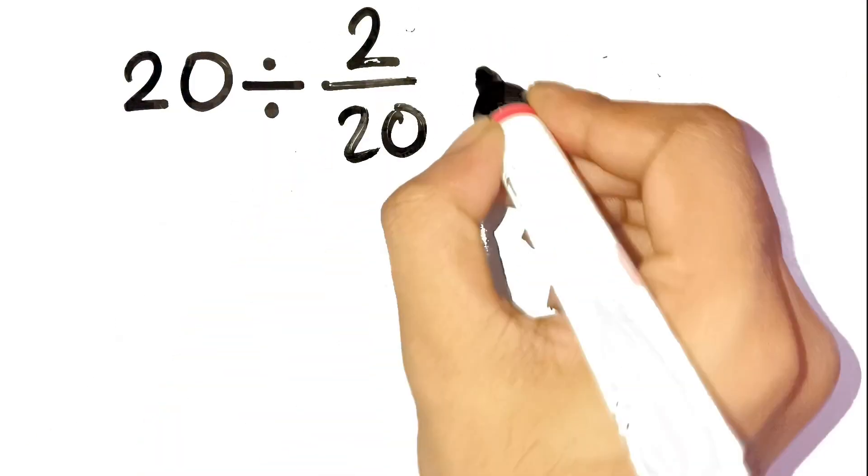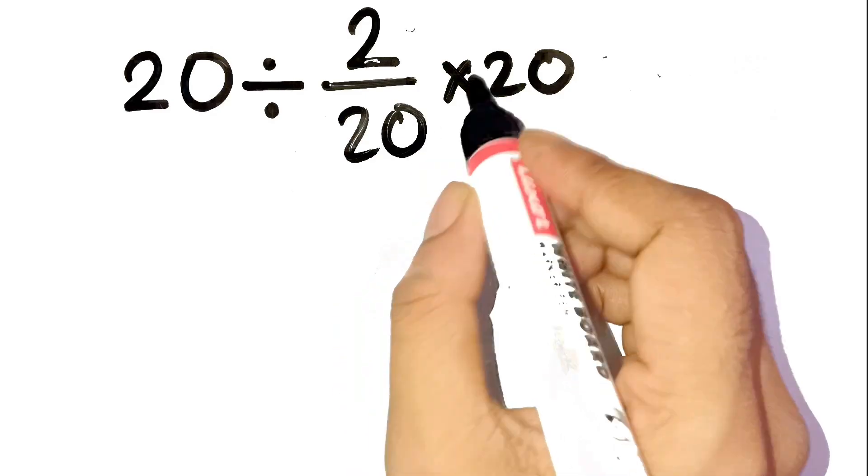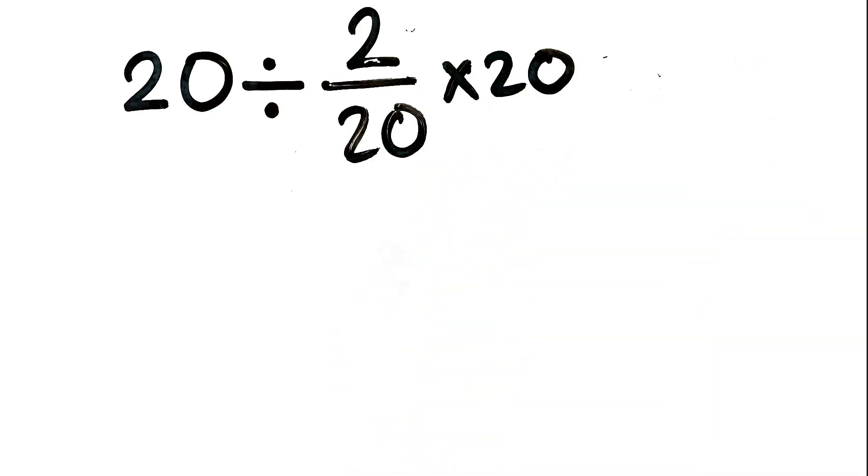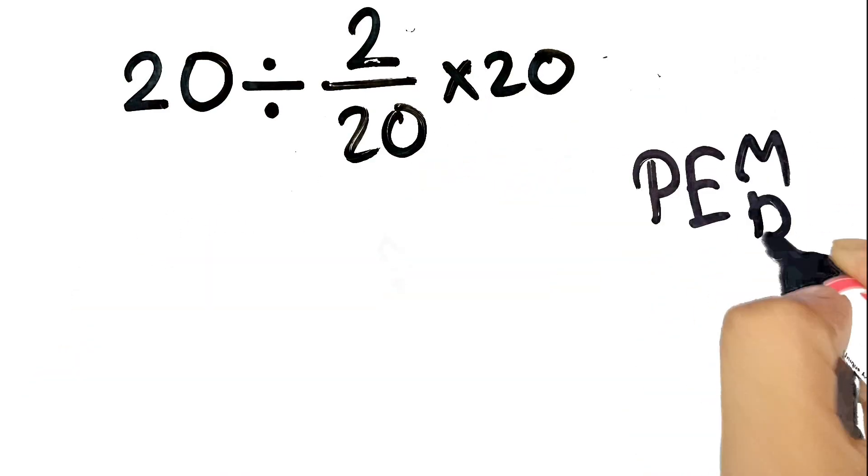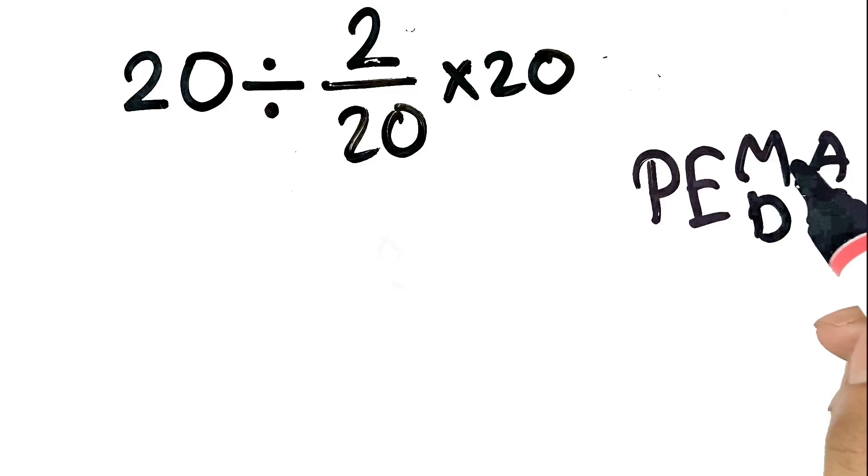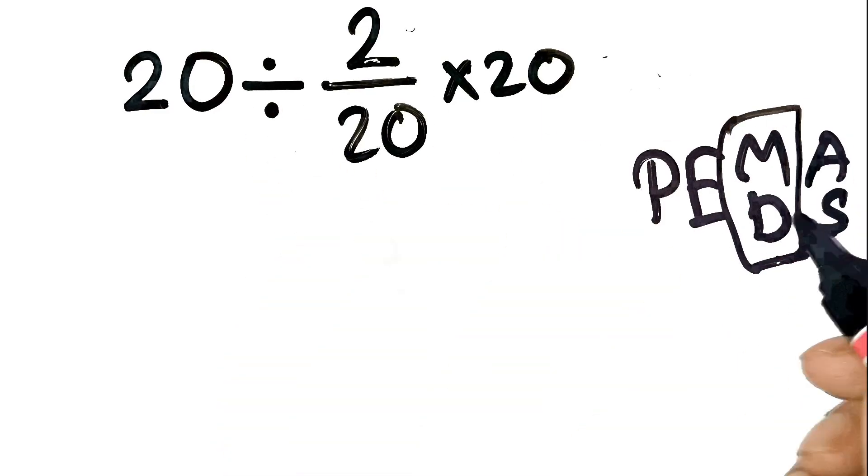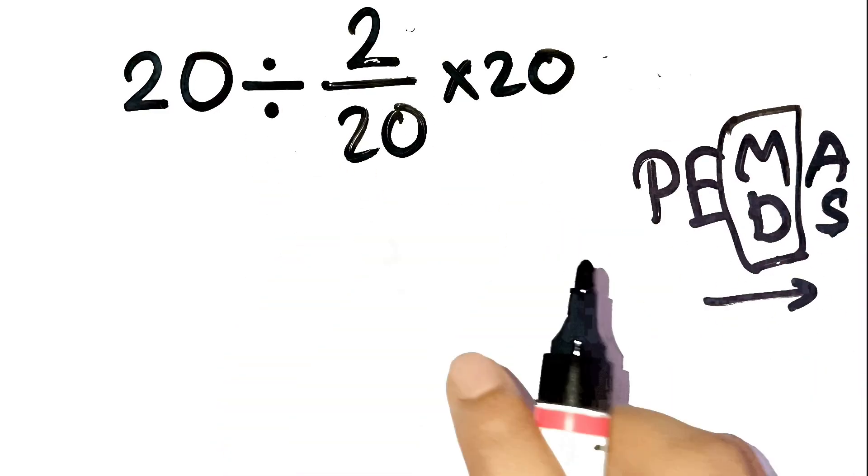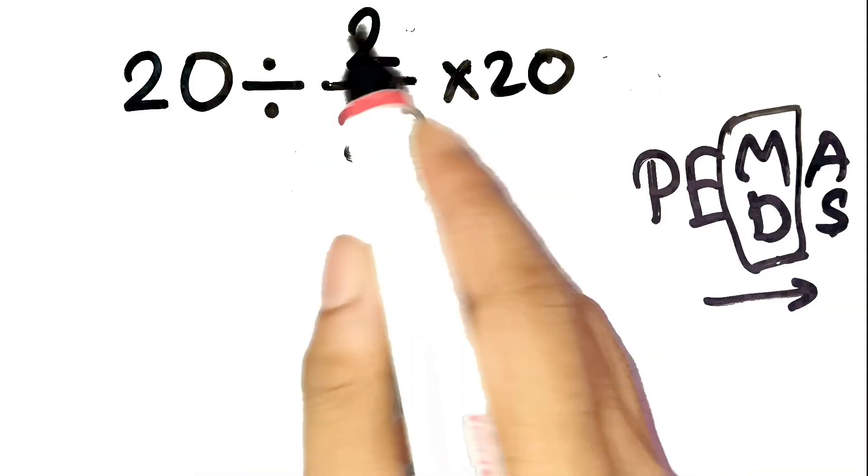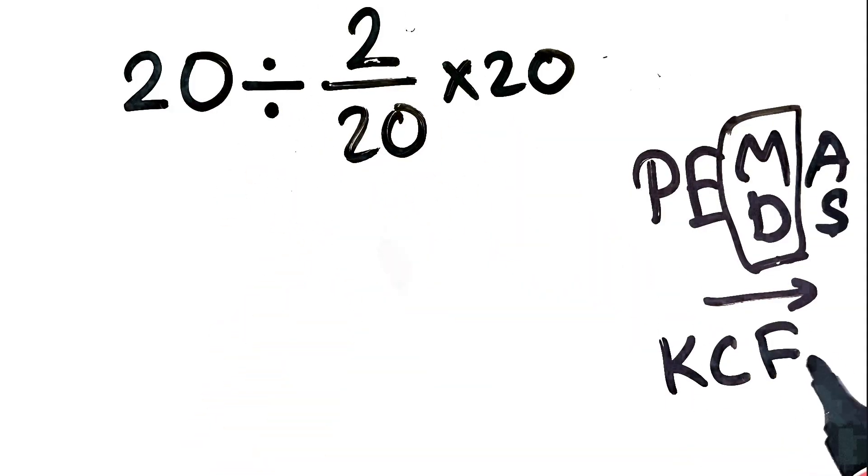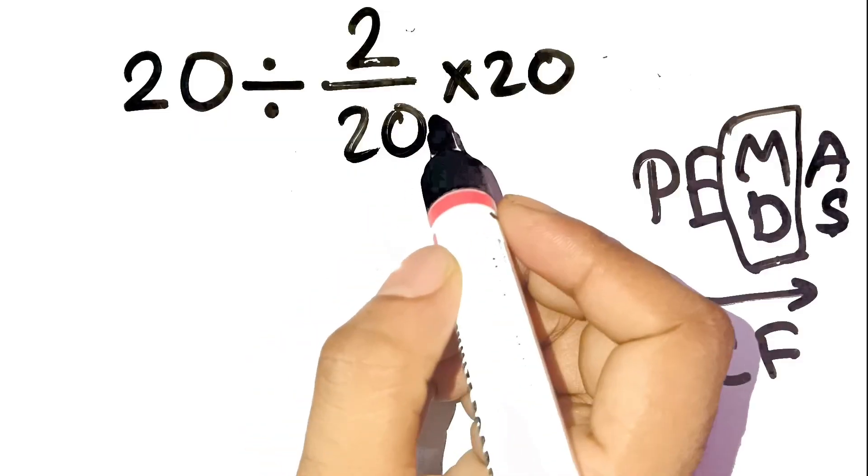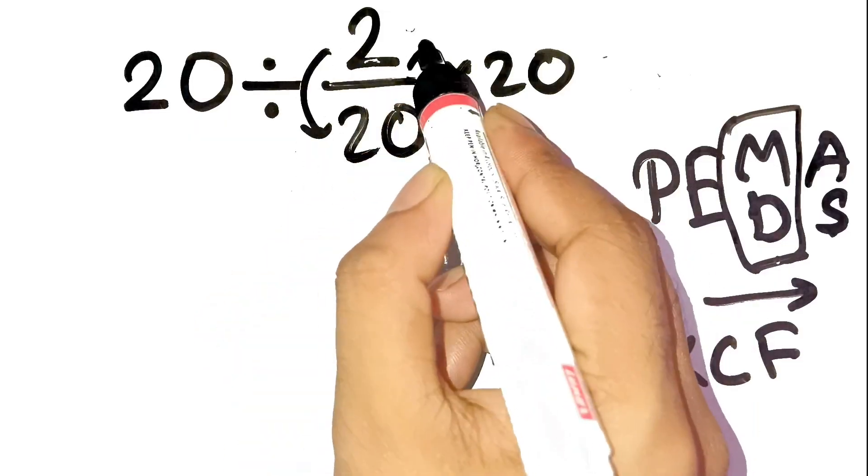All right, let's slow down and do it properly. The problem is 20 divided by 2 over 20 times 20. Now, remember, PEMDAS—that's parentheses, exponents, multiplication, division, addition, subtraction. And here's the important part: multiplication and division have equal priority, so we handle them left to right. Also, when you see a fraction in division, use the keep-change-flip method. Dividing by a fraction is the same as multiplying by its reciprocal.